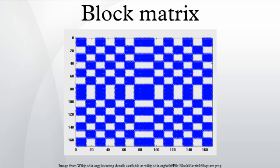Any matrix may be interpreted as a block matrix in one or more ways, with each interpretation defined by how its rows and columns are partitioned.